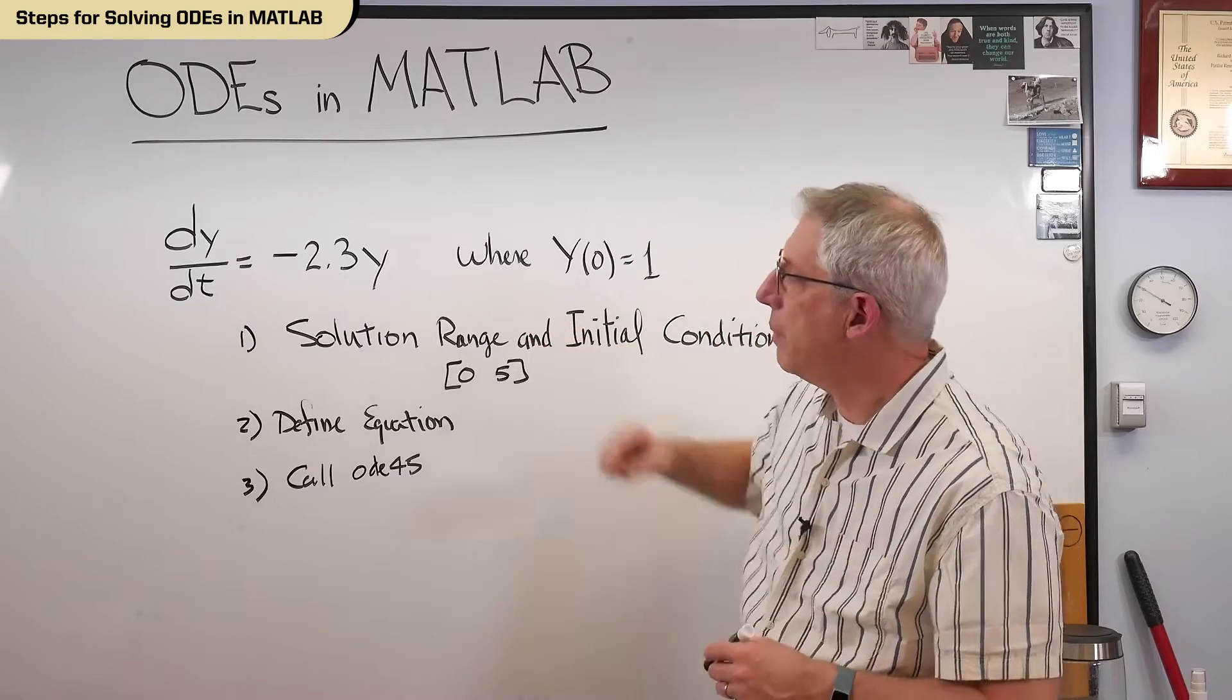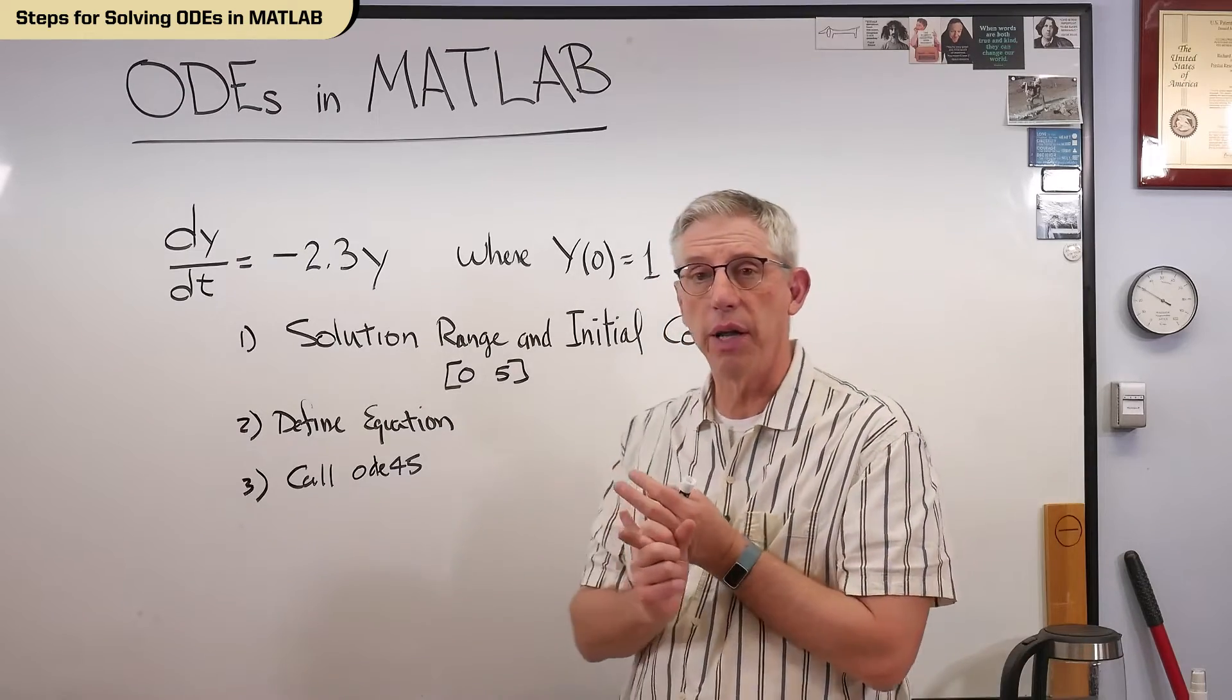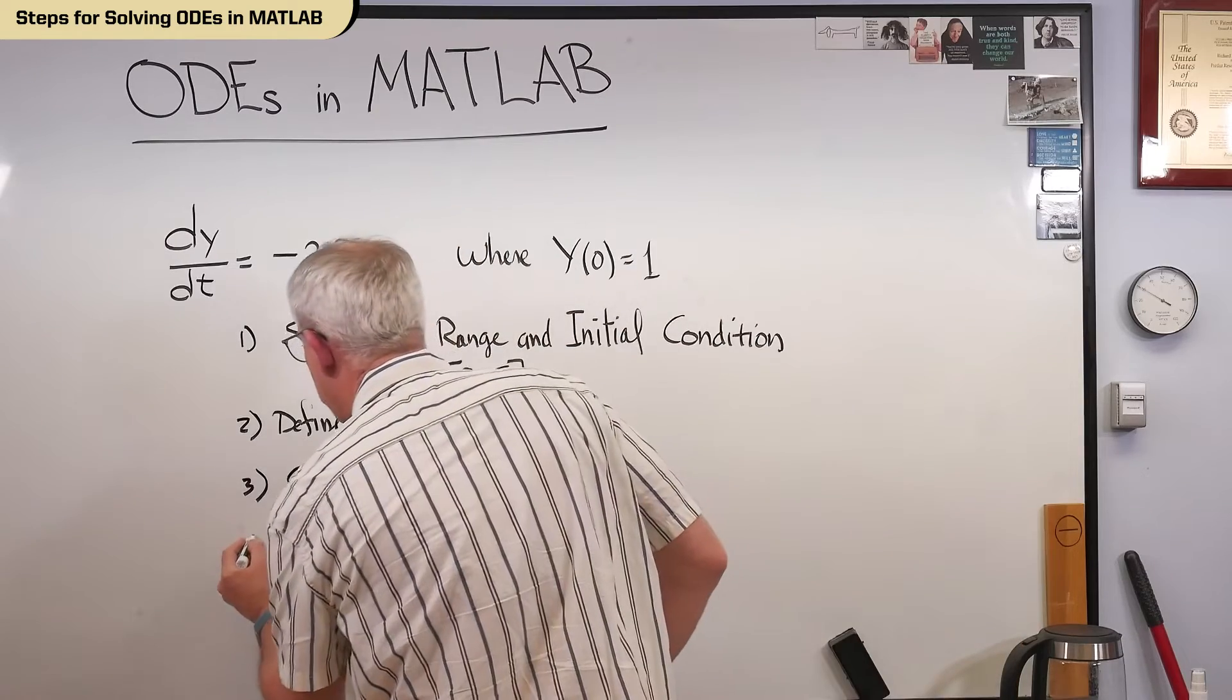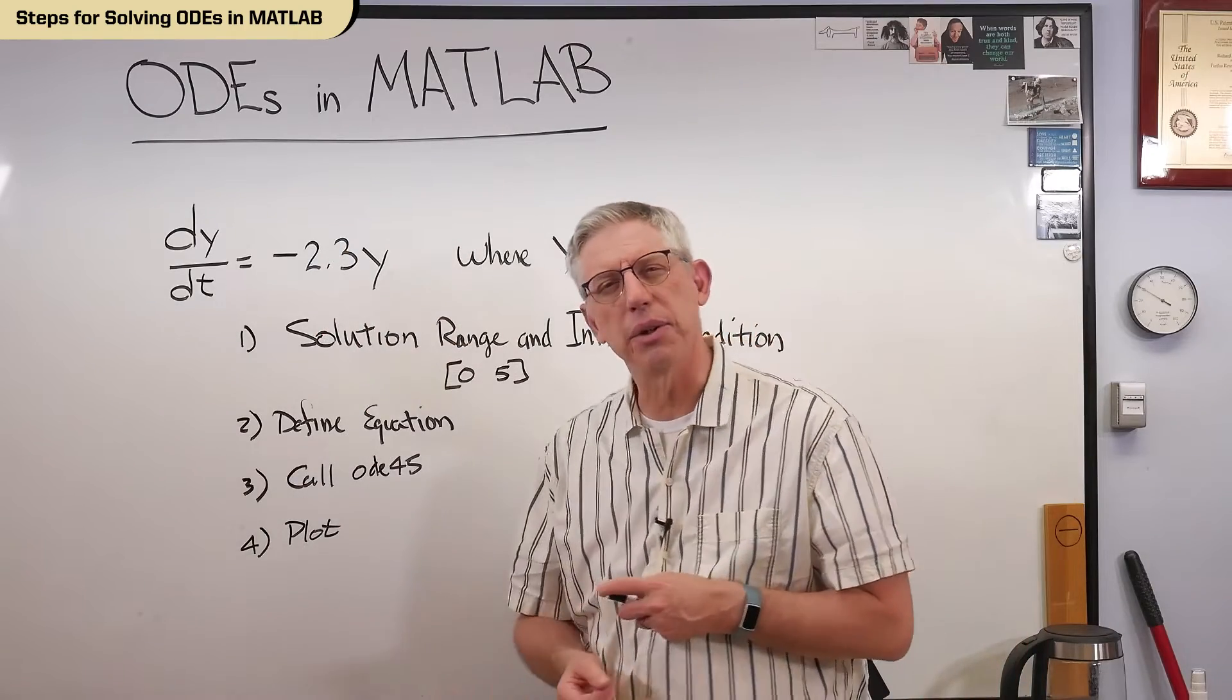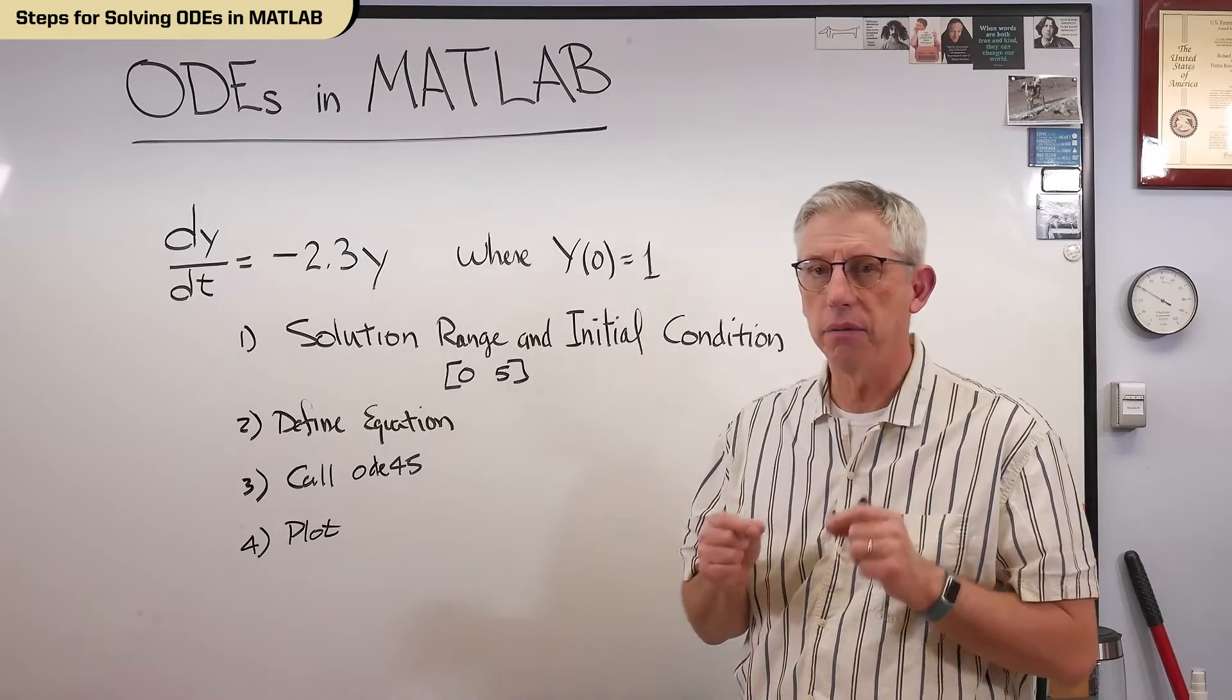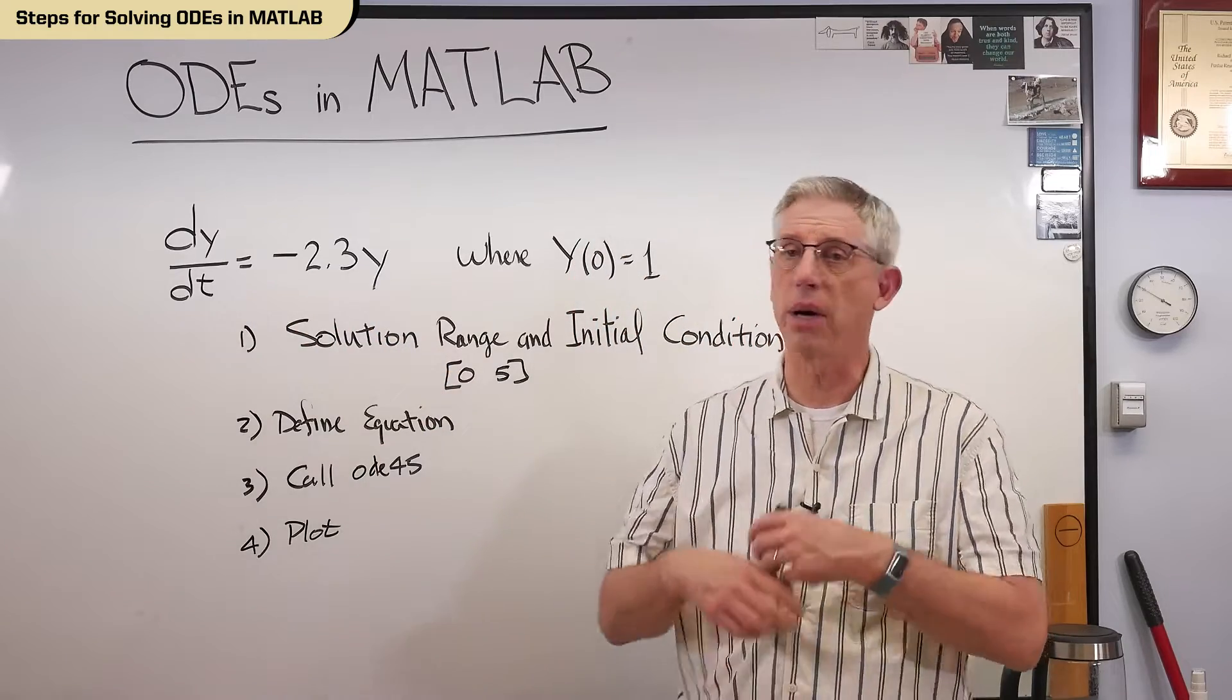So, we're going to do this step by step at my computer. We're going to specify the solution range and the initial condition. Then we're going to define the equation two different ways. And we're going to call ode45. And I guess, last thing, if there's a step four, let's plot the solution. Now, what does it mean to plot a solution? Why are we plotting rather than writing down an equation? This is a very important concept here.